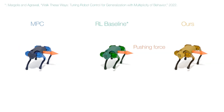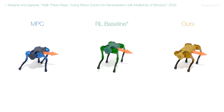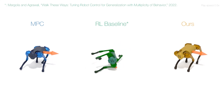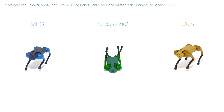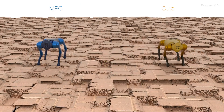In this experiment, we assess the robustness of our policy in rejecting external perturbations by applying a pushing force to the robot's base. Our policy demonstrates superior performance to the RL baseline policy, which utilizes a reward function based on heuristics.